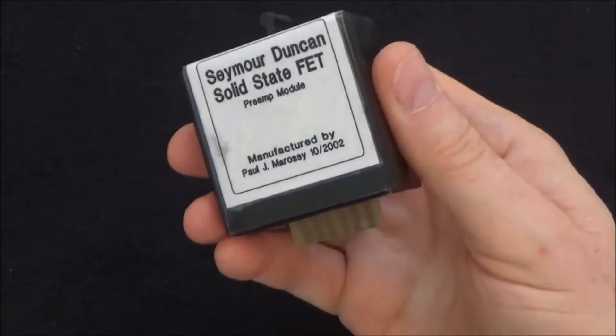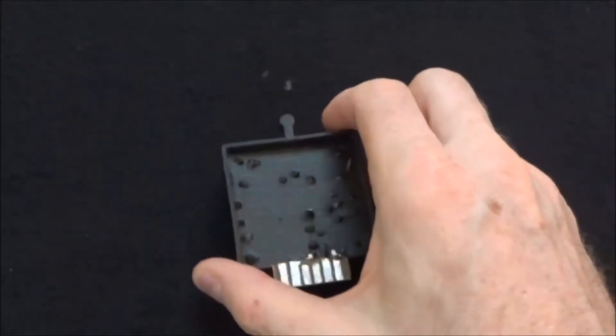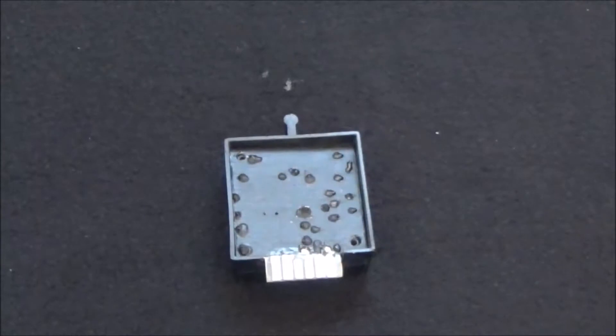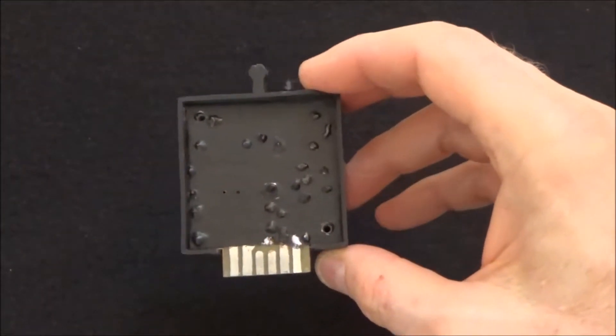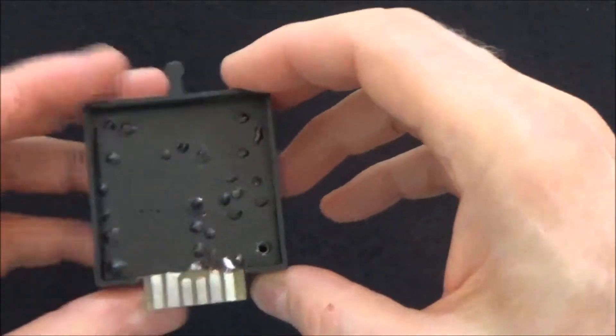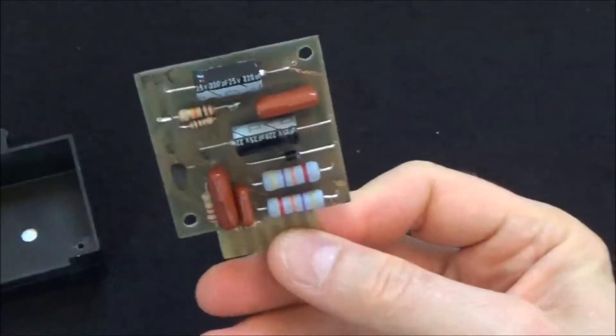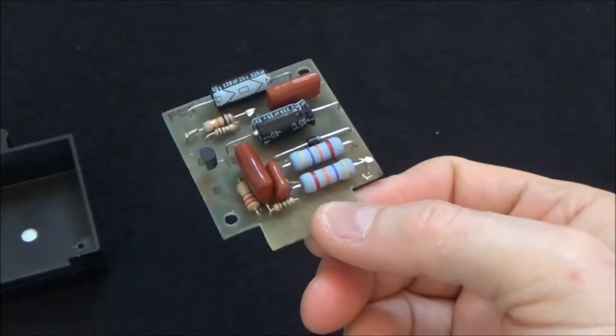I emailed the guy and said, this might sound like an odd request, but can you tell me what the colors on this one resistor are? Because I couldn't tell from the pictures. He said they're blah blah blah, and I said cool, thanks. I don't remember if the auction ended, if he sold it or not, but I was able to take those pictures and work with a friend of mine.